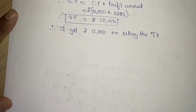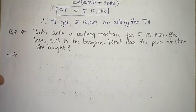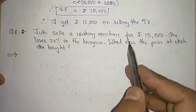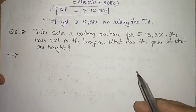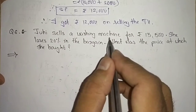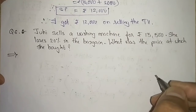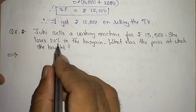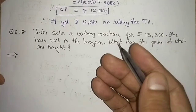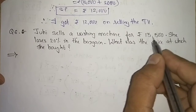Now moving to question number 6. The question says: Juhi sells a washing machine for rupees 13,500. She loses 20 percent in the bargain. While selling and bargaining she lost 20 percent, which means she sold it at a loss.